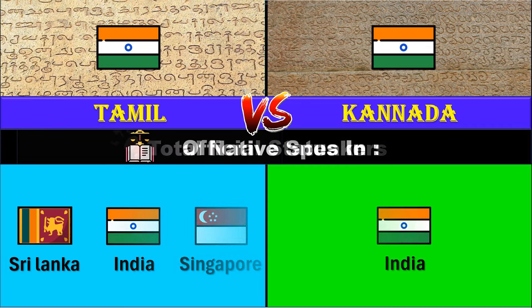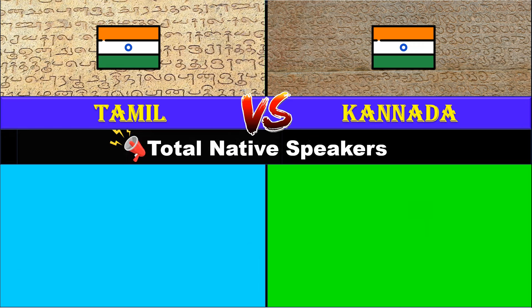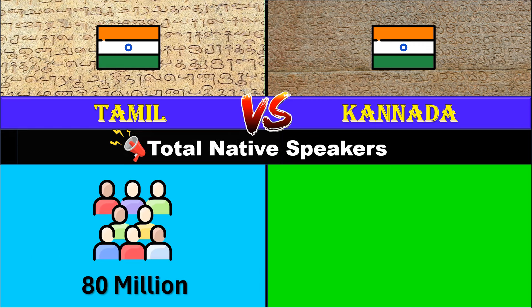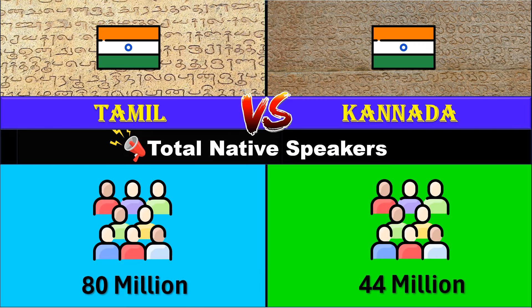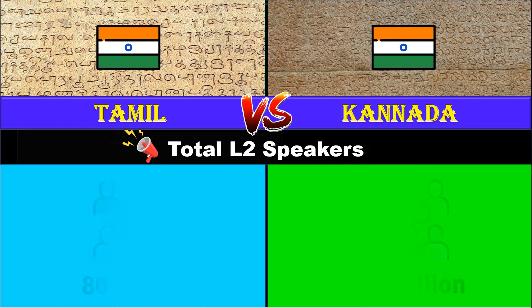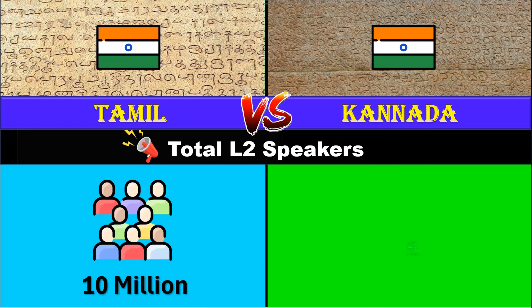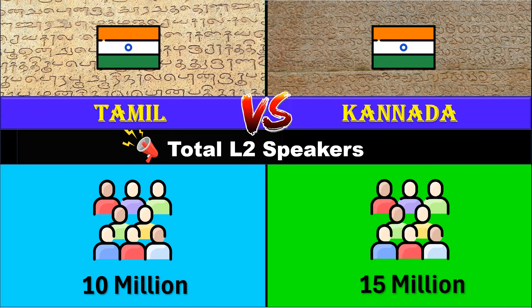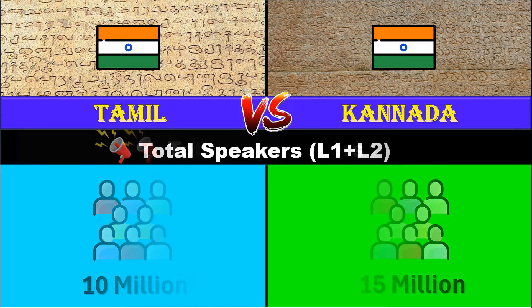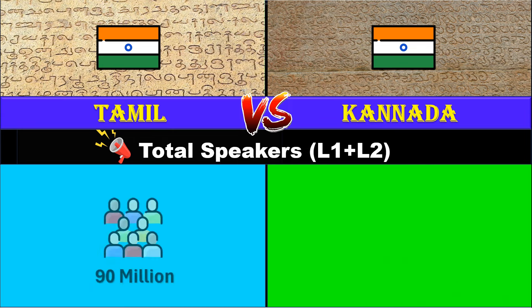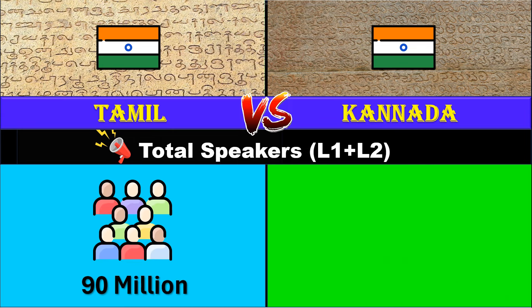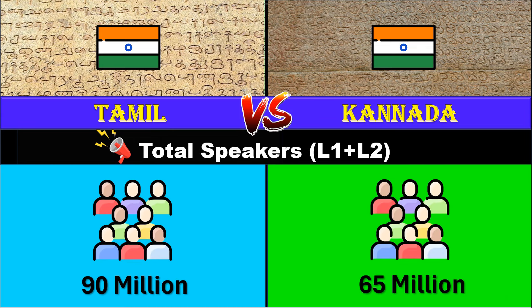Total native speakers: Tamil has 80 million, Kannada has 44 million. Total L2 speakers: Tamil has 10 million, Kannada has 15 million. Total speakers: Tamil has 90 million, Kannada has 65 million.